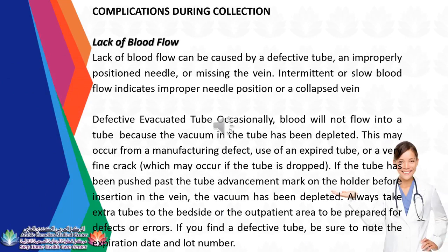Lack of blood flow can be caused by a defective tube, an improperly positioned needle, or missing the vein. Intermittent or slow blood flow indicates improper needle position or a collapsed vein. A defective evacuated tube occasionally results in blood not flowing because the vacuum has been depleted, which may occur from a manufacturing defect, use of an expired tube, or a fine crack from being dropped. Always take extra tubes to the bedside. If you find a defective tube, note the expiration date and lot number.